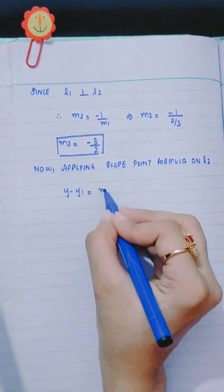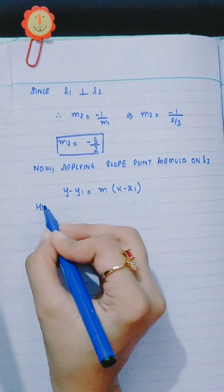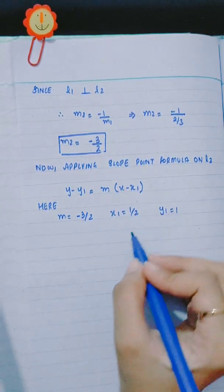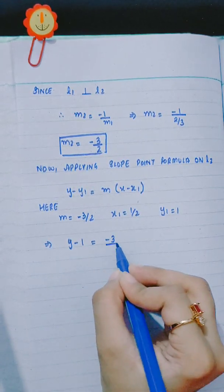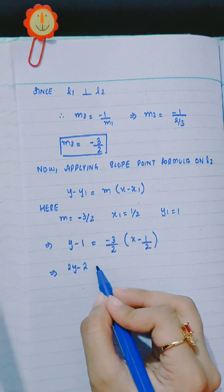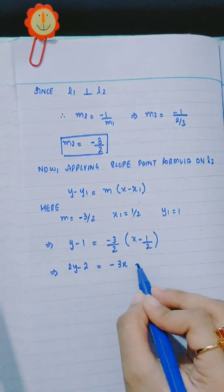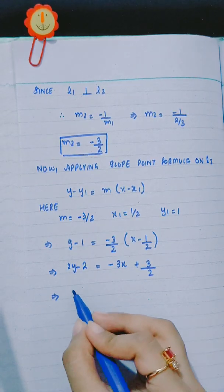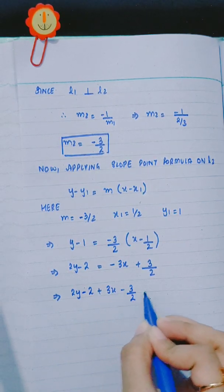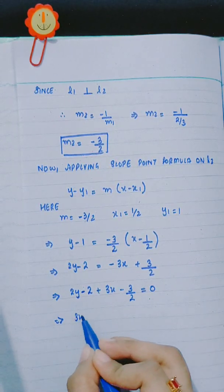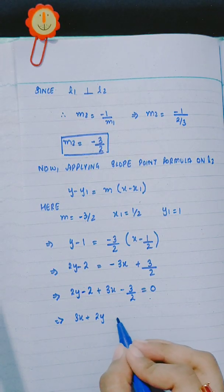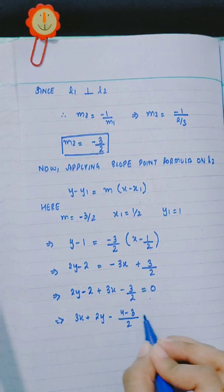Y minus Y1 is equal to M into X minus X1. Here M is equal to minus 3 by 2, X1 is 1 by 2, and Y1 is 1. So Y minus 1 is equal to minus 3 by 2 into X minus 1 by 2. Multiplying through by 2: 2Y minus 2 is equal to minus 3X plus 3 by 2. Rearranging: 3X plus 2Y minus 2 minus 3 by 4 equals 0.